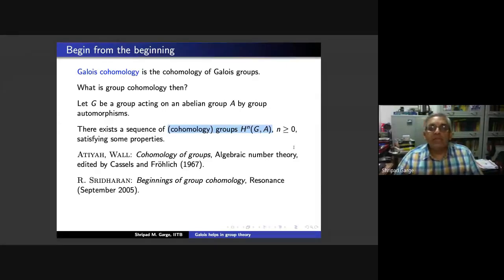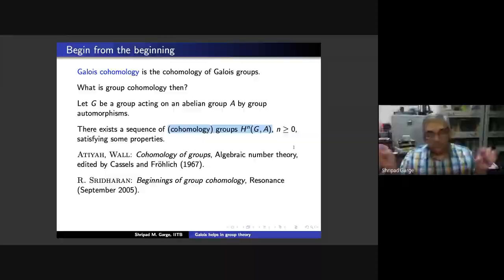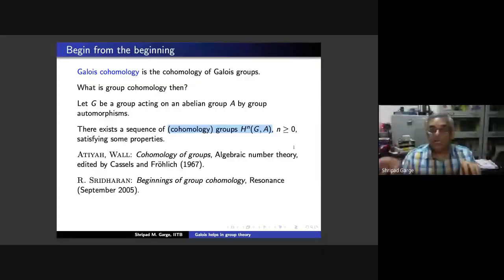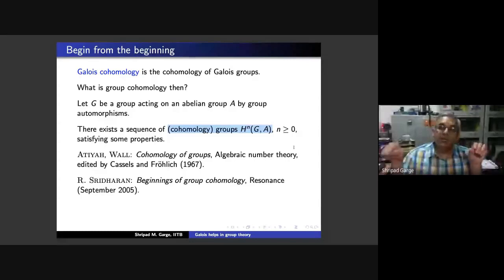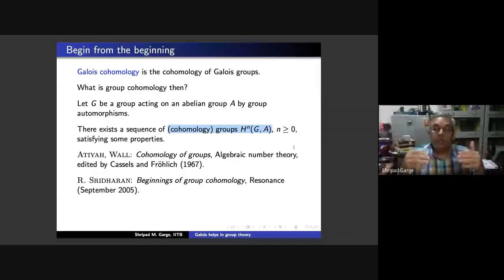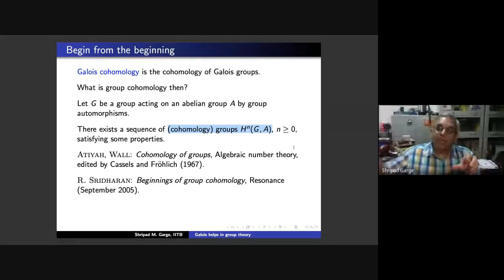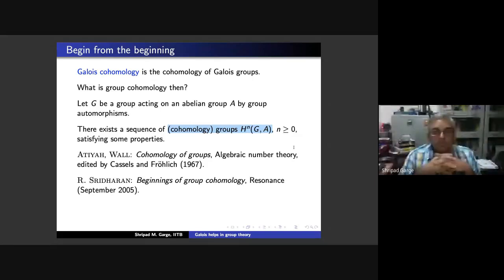The basic problem here is that when you have a short exact sequence 0 → A → B → C → 0 with a group G operating on it — meaning G operates on each term and the homomorphisms commute with the group action — then the corresponding sequence for the fixed points need not remain exact. The question is whether you can extend it further by putting some groups, and that is what gives rise to these homology groups. These are derived groups in that sense.